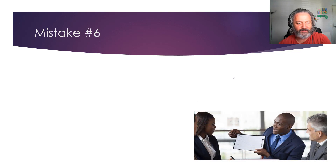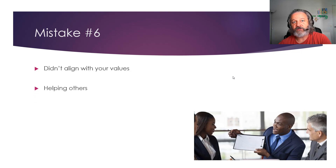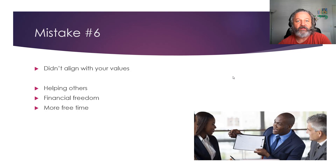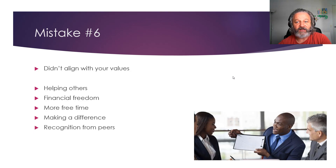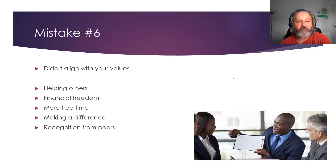The next mistake — I've jumped to number six — is didn't align with your values. What are your values and what's important to you? Helping other people, financial freedom, having more free time? If you've got a job or you're trying to achieve something that's going to take you away from your family and swallow up all your time — for example, working on an oil rig doing IT, or in a coal mine — then you probably won't achieve it because it doesn't align with your values. Also consider making a difference to others and getting recognition from peers. When I worked at Cisco TAC, if you passed a hard exam, you got recognition from your bosses and all your work colleagues, and it was really good. Think about what's important to you — it may be that being a programmer doesn't align with your values, but being a security expert does.